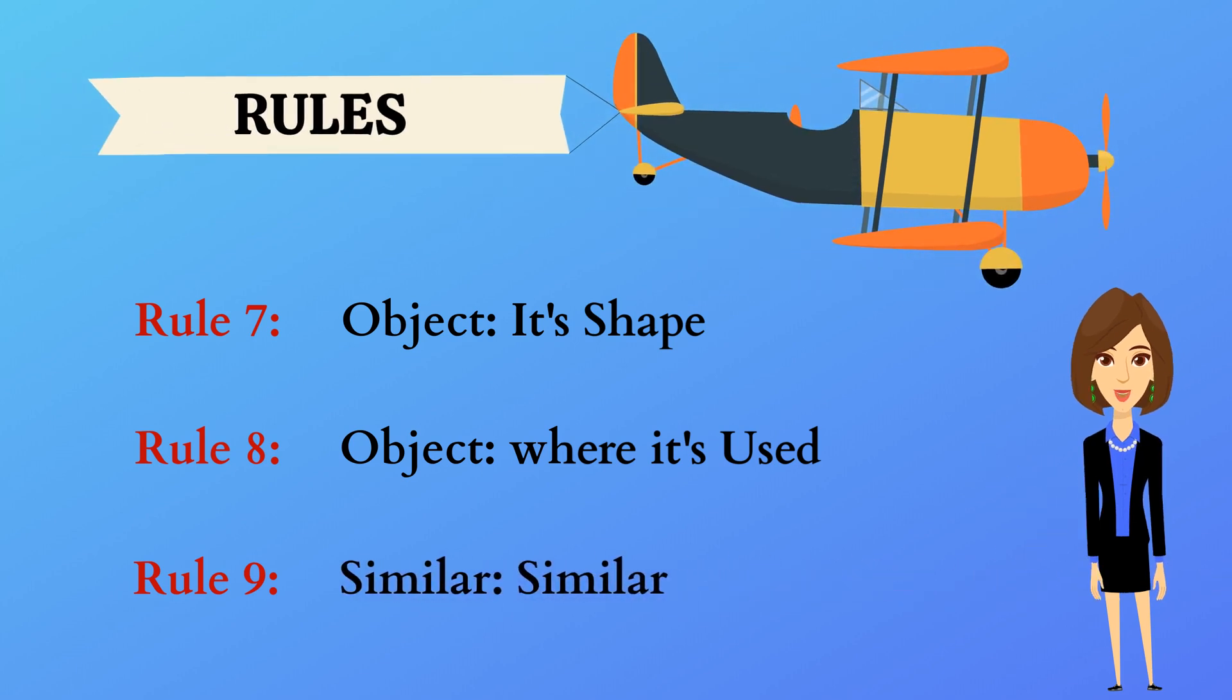Rule 9: Similar objects. Similarity could be based on anything like color, size, family, etc.